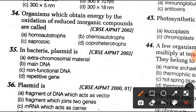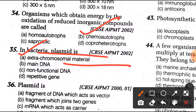Question number 34: organisms which obtain energy by oxidation of reduced inorganic compounds are called chemoautotrophs. Question number 35: in bacteria, a plasmid is the extra chromosomal material.